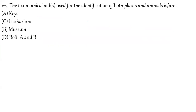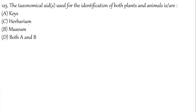Question 125: The taxonomical aid used for identification of both plants and animals — it is the key. Museums also help for the same purpose, not only keys. The correct answer for question 125 is option D — both key and museum.